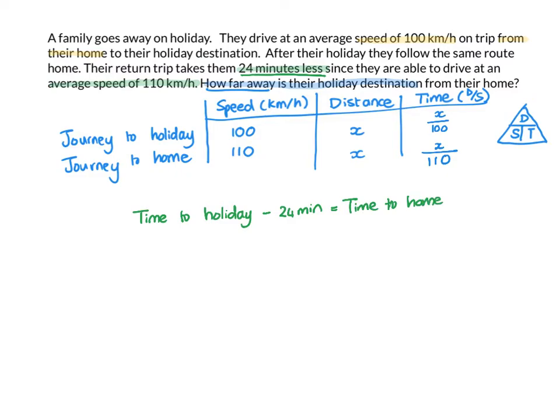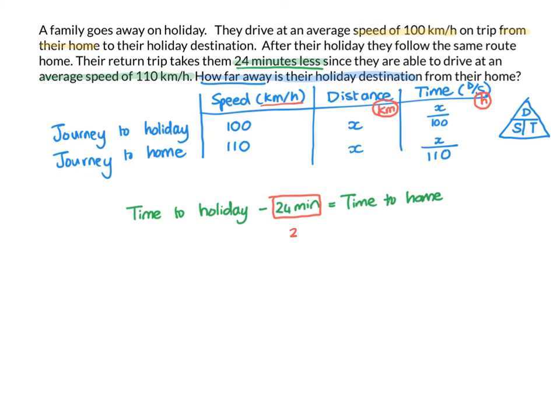Now, let's quickly discuss units before we go on to answering this question or to setting up the equation. So, if the speed was in kilometers per hour, the distance that you give will have to give an answer in kilometers. And the time will need to be in hours. Now, here they've given 24 minutes. That's not in the same unit as the rest of my equation. So, I'm rather going to write that as 24 out of 60.